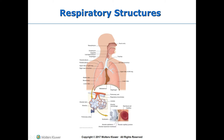The cells of the alveoli are type 1 pneumocytes, which make up the majority of the walls, and type 2 pneumocytes, which secrete an oily substance called surfactant. Surfactant prevents the collapsing of the alveoli by reducing surface tension. We also have wandering alveolar macrophages that detect problems within the alveoli. Diffusion of gas happens here at a very fast pace when there are no problems with the respiratory membrane.